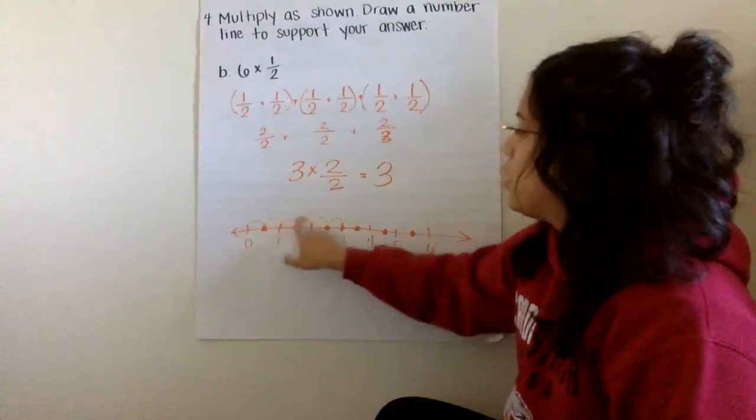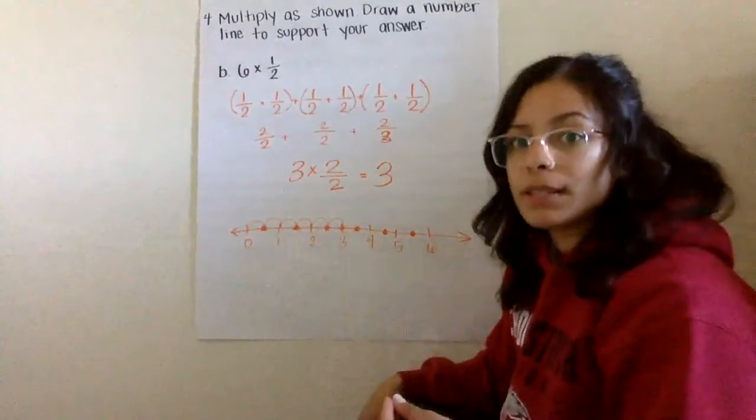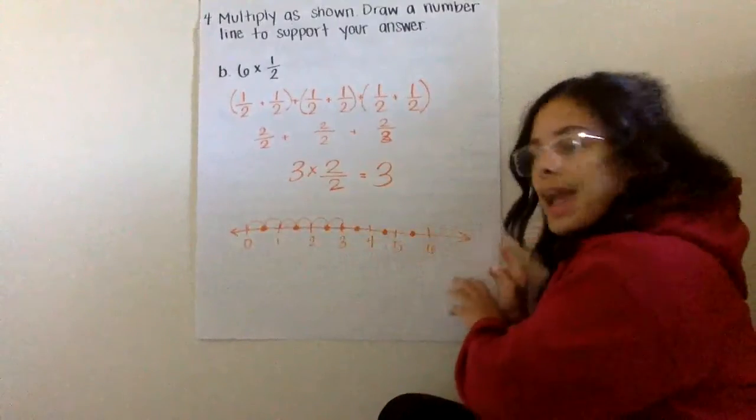So one, two, three, four, five, six. And that showed me, once again, an example of why my product of three is accurate.